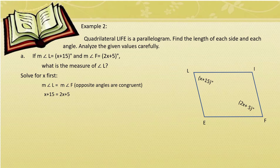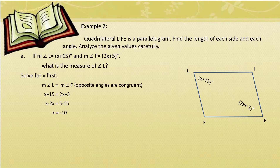Substitute the values: X + 15 = 2X + 5. Combine like terms — transpose 2X to the left side: X − 2X = 5 − 15, giving −X = −10. Multiply both sides by −1, so X = 10.